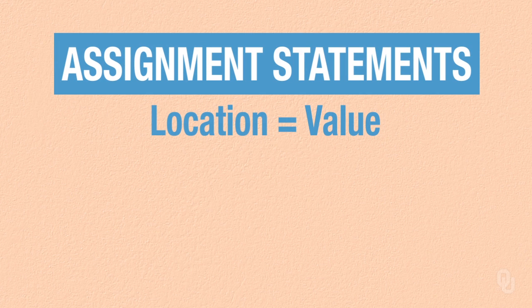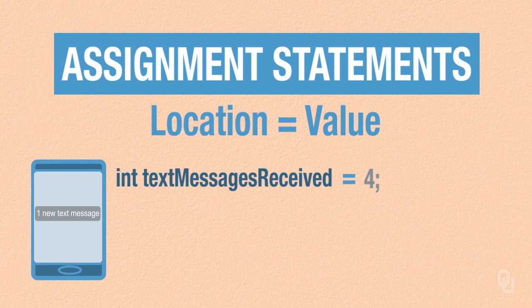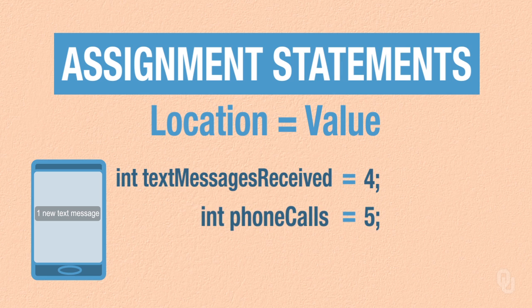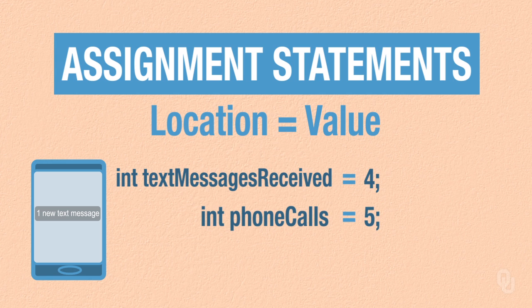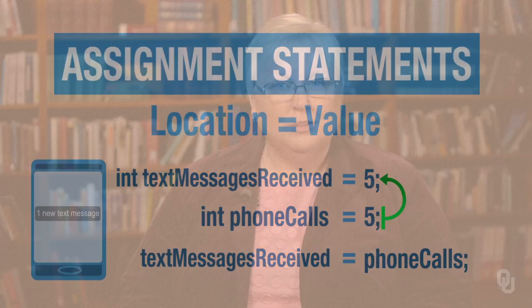To put data in the computer we use an assignment statement. With assignment statements the left hand side and the right hand side are different. On the left hand side there is a location, and on the right hand side there is a value. So if we said textMessagesReceived = 4, we would take the value 4 and store it in the textMessagesReceived location. Now this looks like math but it isn't — this is a place where computer science and math are really different. We could create another location by saying int phoneCalls = 5. If we wanted to take the value in phoneCalls and put it in textMessagesReceived, we would say textMessagesReceived = phoneCalls. This takes the value 5 and stores it there, and the data that was previously there is lost and we can't get it back.